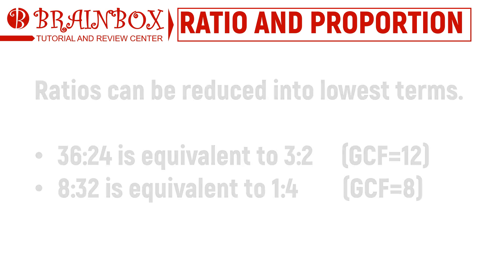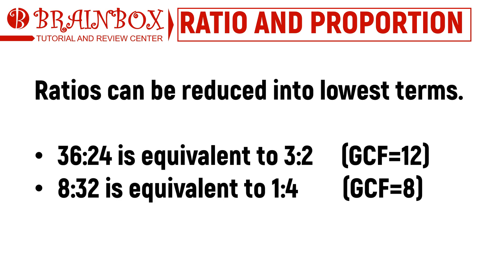Just like fractions, we can also reduce ratios to lowest terms. Instead of writing it as 36 to 24 (GCF = 12), we can express it as 3 to 2. Similarly, 8 to 32 (GCF = 8) can also be written equivalently as 1 to 4.